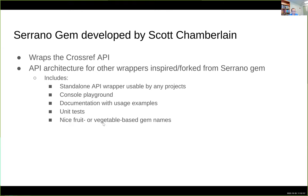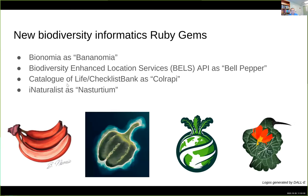Each gem also comes with a fruit or vegetable based name, which we've continued with the new biodiversity informatics gems. So far I've wrapped MycoNomia as Banana Nomia, Biodiversity Enhanced Location Services (BELLS) as Bell Pepper, Catalog of Life and Checklist Bank as Cole Rappy, and iNaturalist as Nasturtium. I also realized we don't have an API wrapper for TaxonWorks yet, so keep an eye out for that in the Species File Group organization repositories.